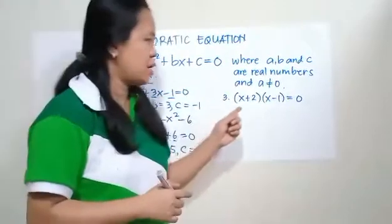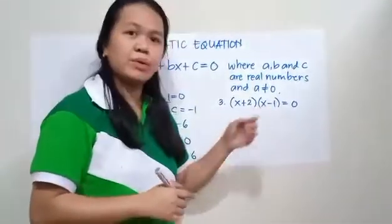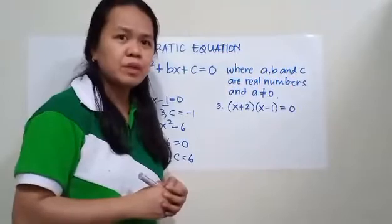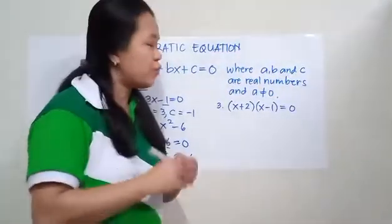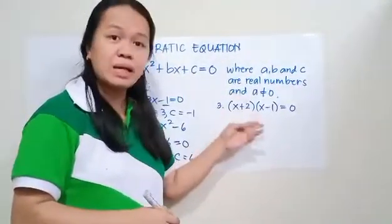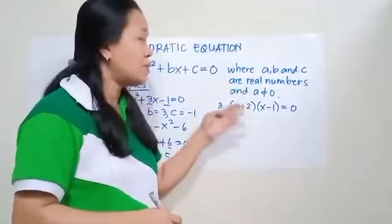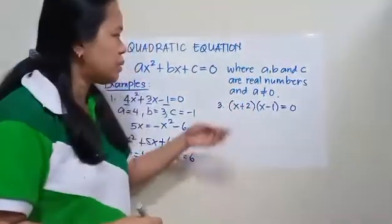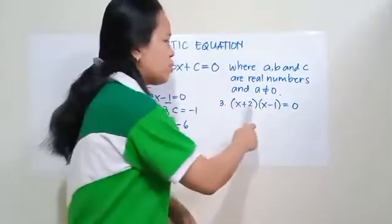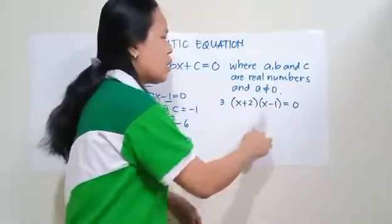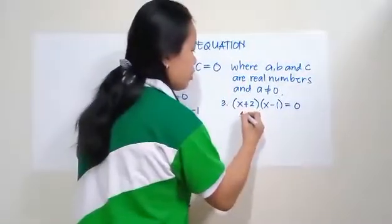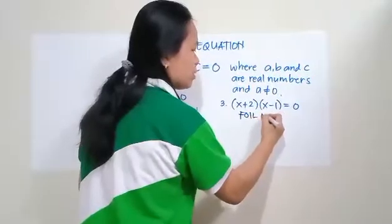Let's go to number 3. Is this an example of a quadratic equation? To identify if this is a quadratic equation or not, we have to multiply first these two binomials. We are going to use the FOIL method.